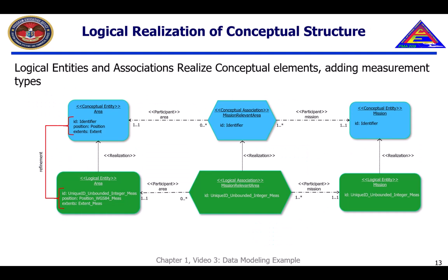A key feature of the FACE data modeling pattern is linkages between more concrete elements and more abstract elements. In this diagram, the logical entities and association are more refined representations of the conceptual entities and association. The diagram shows how the characteristics defined by the observables at the conceptual level are reflected in the corresponding characteristics at the logical level. The logical level refines the characteristics by applying measurements to the logical characteristics.